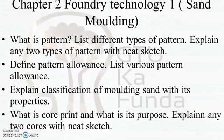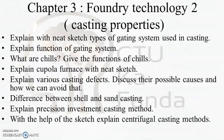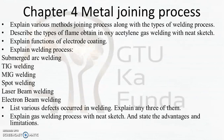For chapter three, Foundry Technology 2, questions include: explain casting properties with neat sketch, types of gating systems used in casting, explain the function of the gating system, what are chills and their function, explain cupola furnace with neat sketch, explain various casting defects with possible causes and how to avoid them, difference between shell and sand casting, explain precision investment casting method with sketch, and explain centrifugal casting methods.